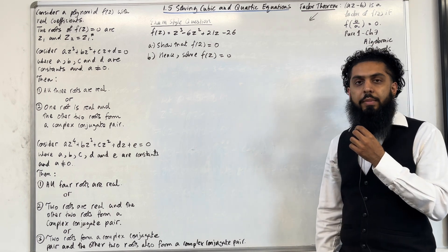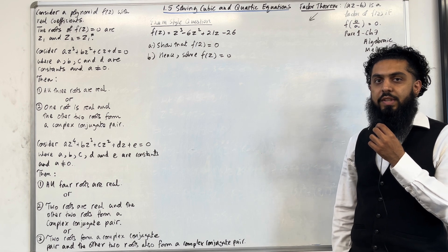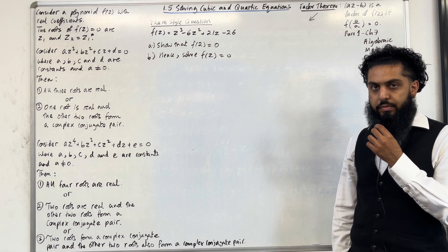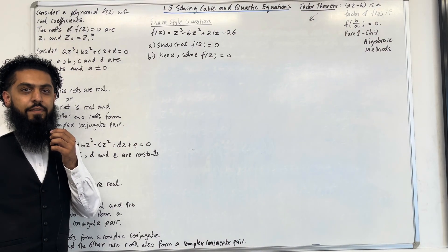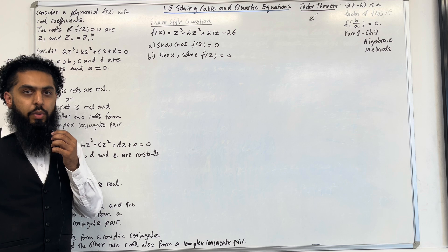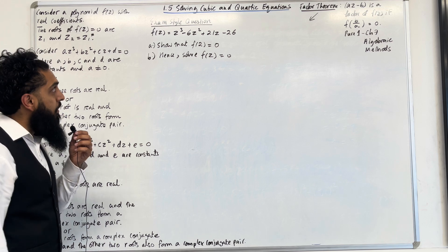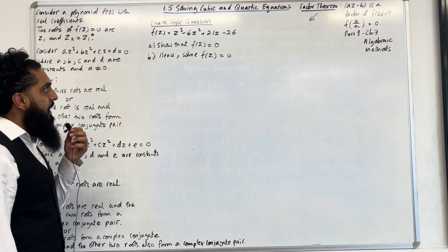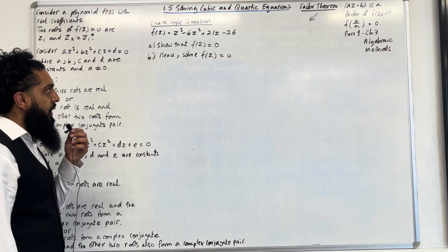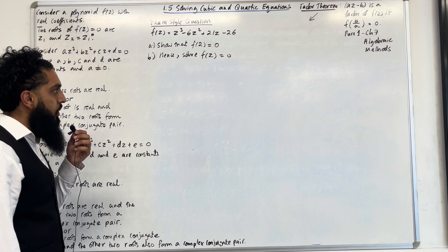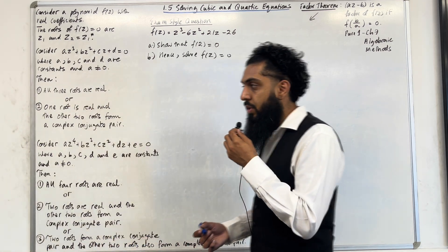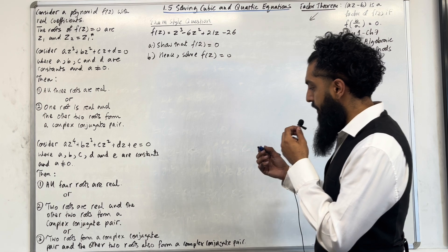I'll be implementing these key facts within exam style questions. Let's have a look at the first exam style question. f(z) = z³ − 6z² + 21z − 26. Part A: show that f(2) = 0. Let's have a look at the solution to part A.